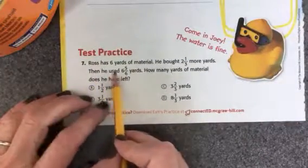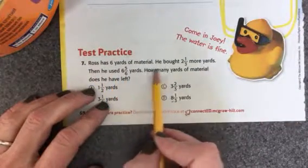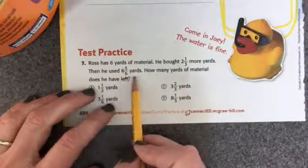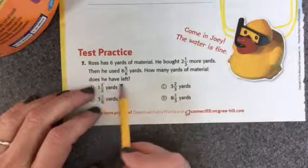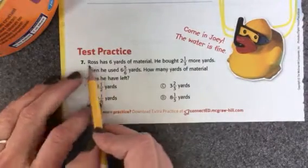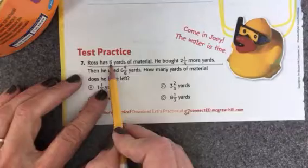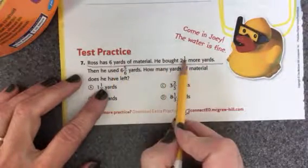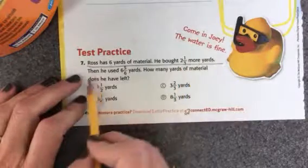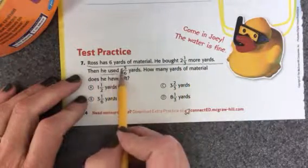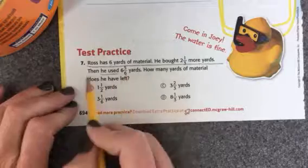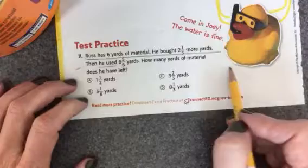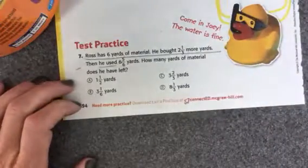Let's look at this one. Ross has 6 yards of material and he bought 2 and 1 3rd more yards. Then he used 6 and 5 6ths yards. How many yards of material does he have left? Well, the first line here tells me he has 6 and he gets 2 and 1 3rd more. So I'm going to have to add those two numbers together. After I add them together, then he uses 6 and 5 6ths yards and used is going to be subtract. So I'll work that problem out and then find the right answer.